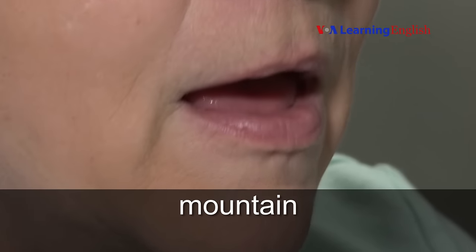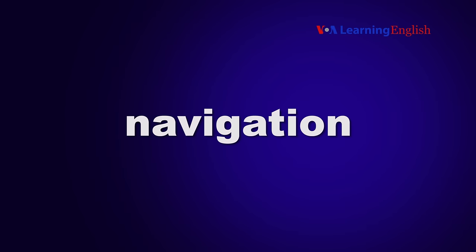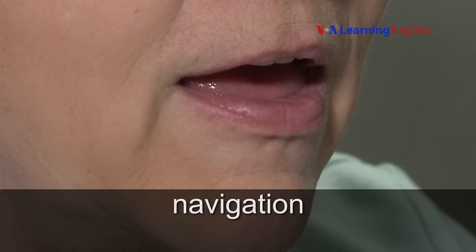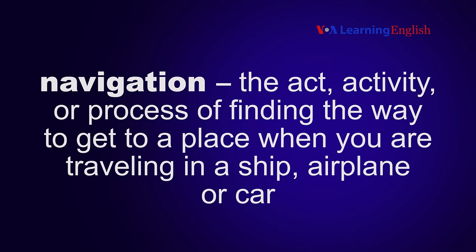Mountain. A mountain is an area of land that rises very high above the land around it and that is higher than a hill. Navigation is the act, activity, or process of finding the way to get to a place when you are traveling in a ship, airplane, or car.